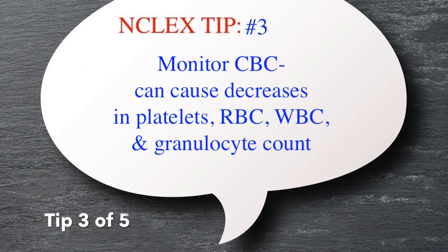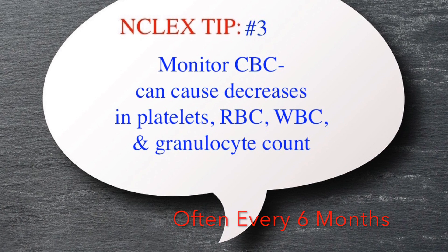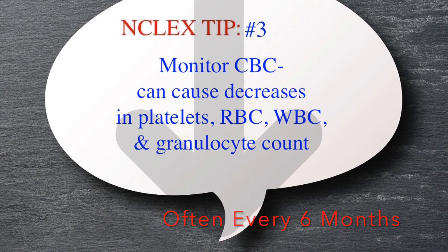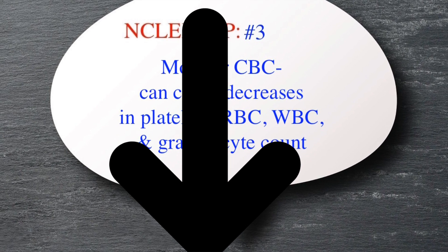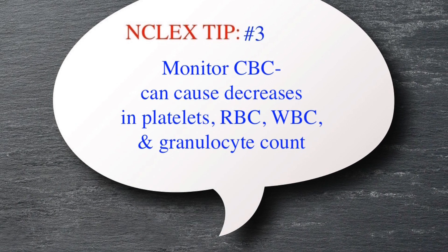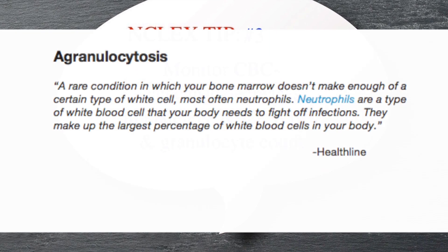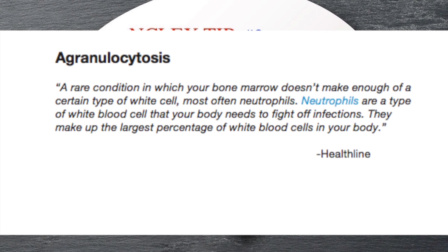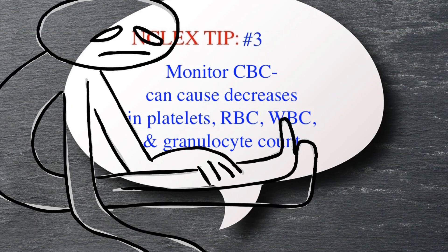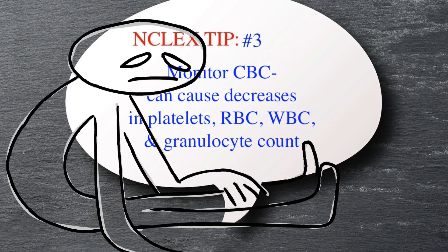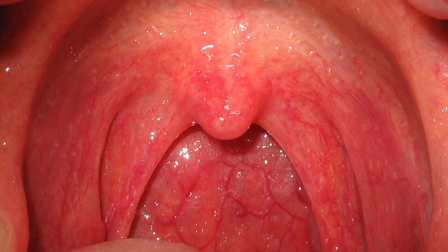Tip number three: CBC count should be monitored closely, actually every six months. Phenytoin can cause decreases in platelets, red blood cells, white blood cells, and granulocyte count. If an individual on Phenytoin develops agranulocytosis, this can be life threatening and may rapidly cause the patient to decline. Signs and symptoms to watch for are sudden fever and sore throat.